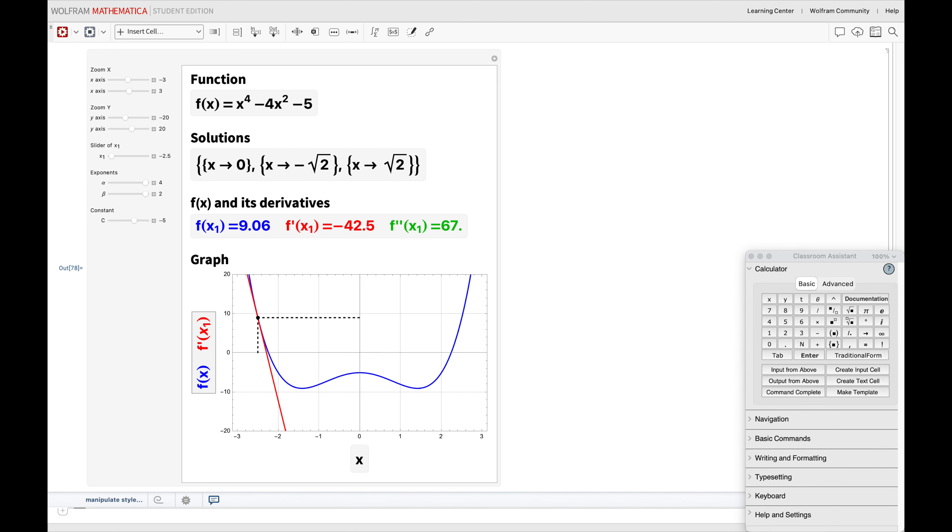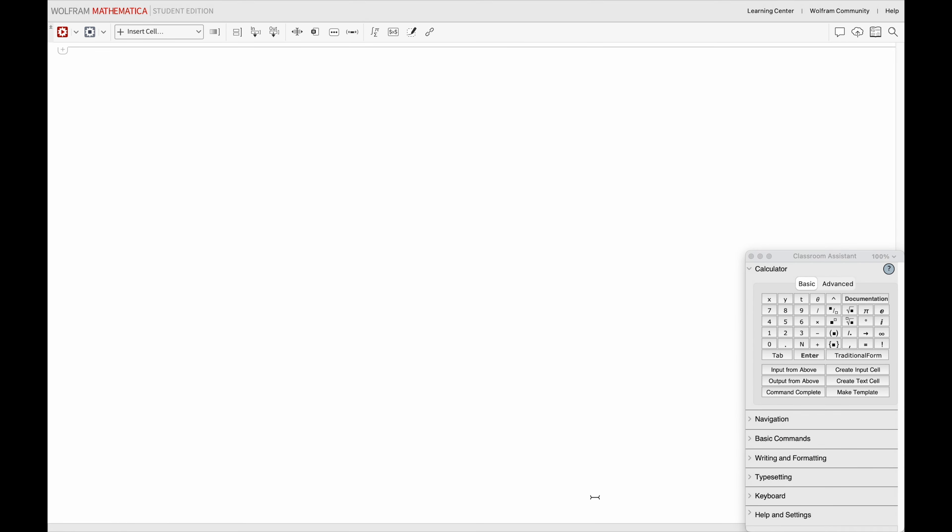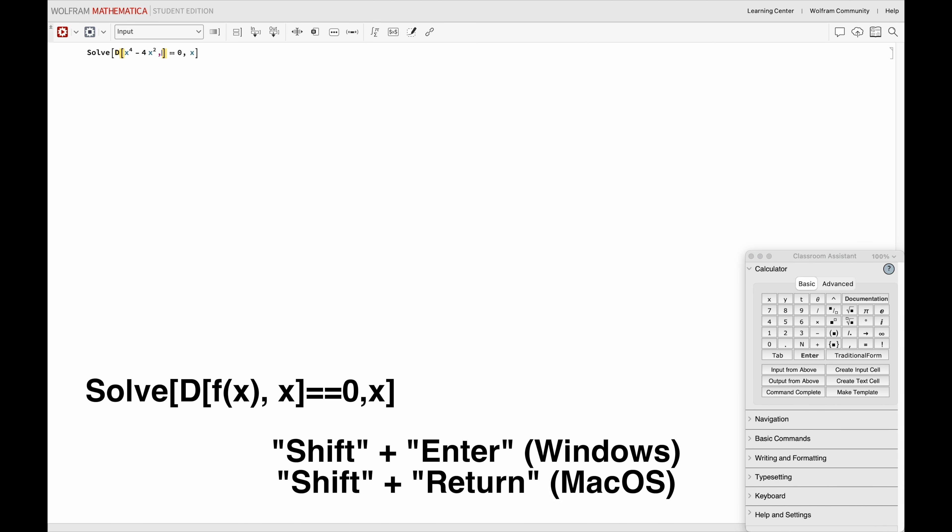But let's make things easier through Wolfram Mathematica. To find all maximum and minimum points of any function that is differentiable that you may have, just type solve, open and close square brackets, within these square brackets type two equal signs, followed by a zero, followed by a comma, and then the variable, typically x. Now, right before the two equal signs, type d, open and close square brackets, within which you now type the function, comma, and the variable. Finally, hit shift plus enter and let Mathematica do its magic.